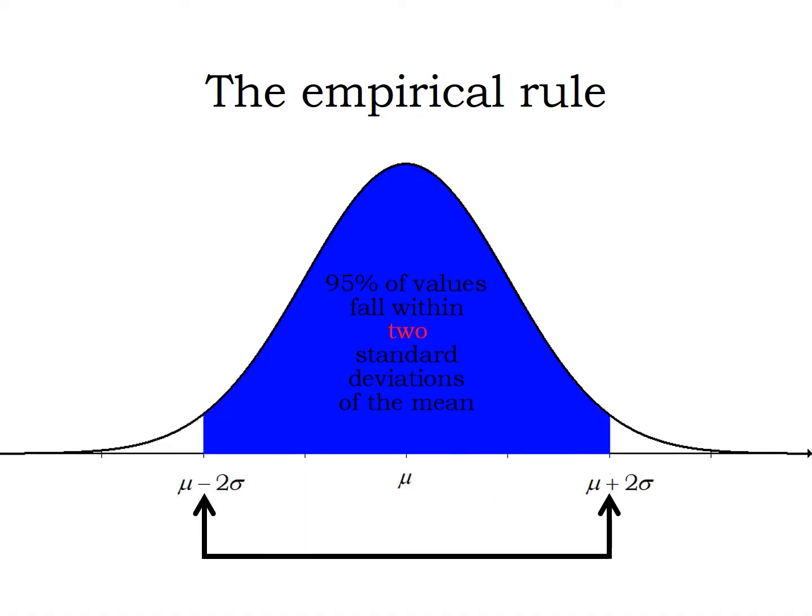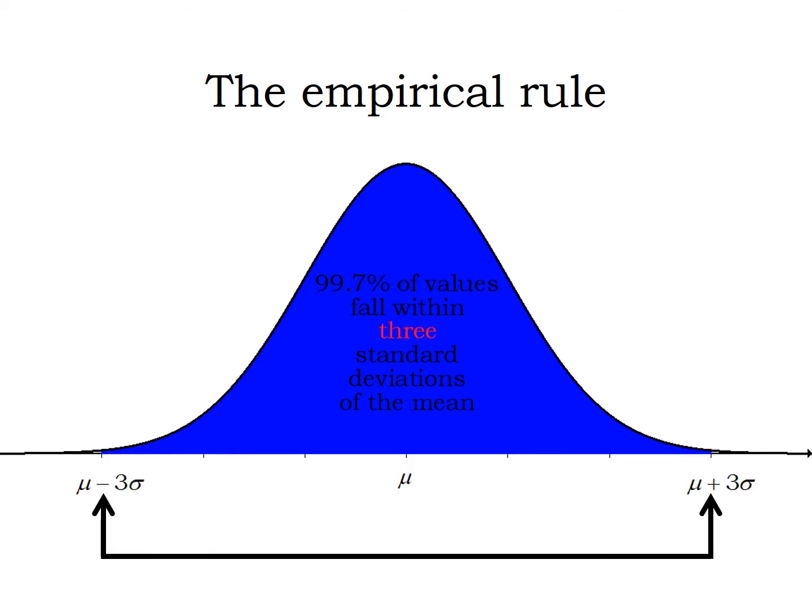Two standard deviations, so a distance of two σ from μ in each direction—as long as we have this nice symmetric curve, remember symmetric has peak in the middle and falls off evenly on both sides—we're gonna have 95% of the values fall in that range. And 99.7% of the values will fall within three standard deviations when we have a symmetric normal distribution.